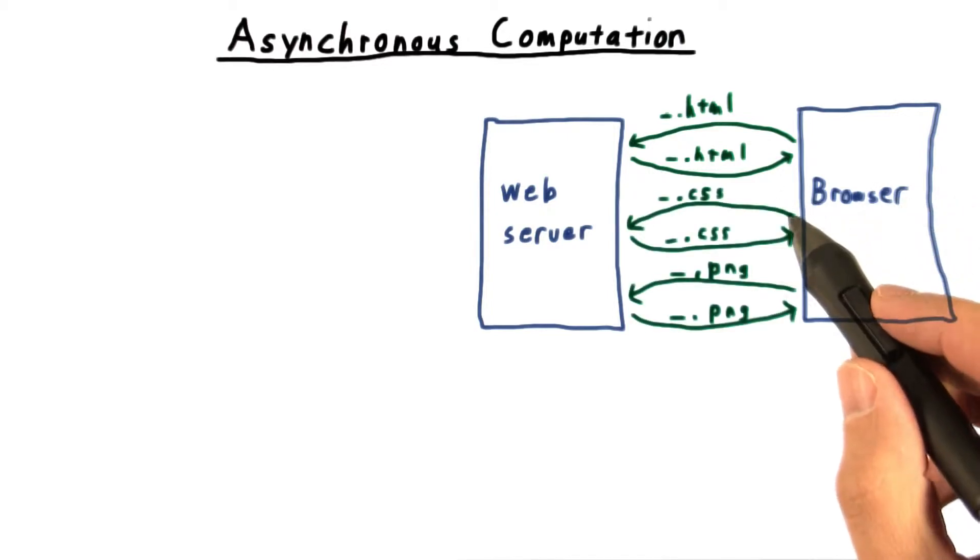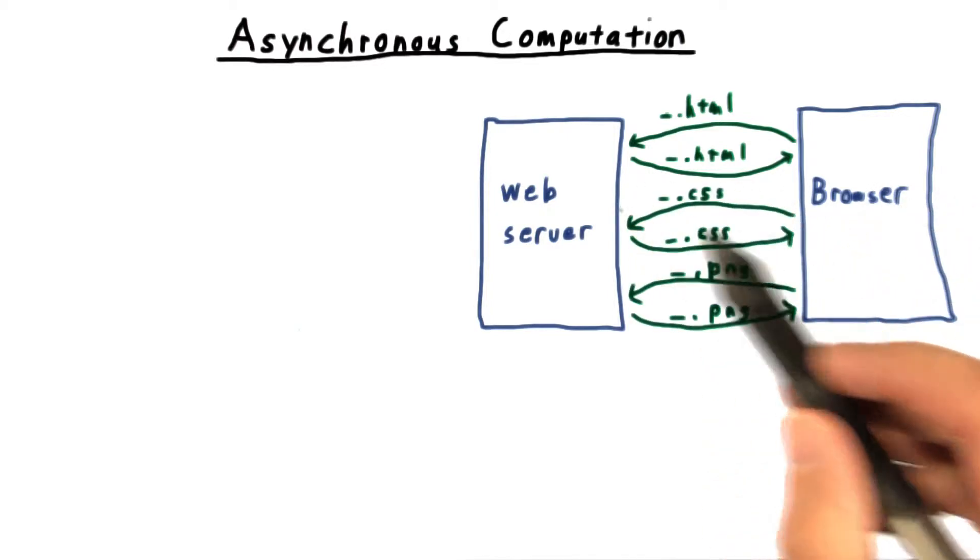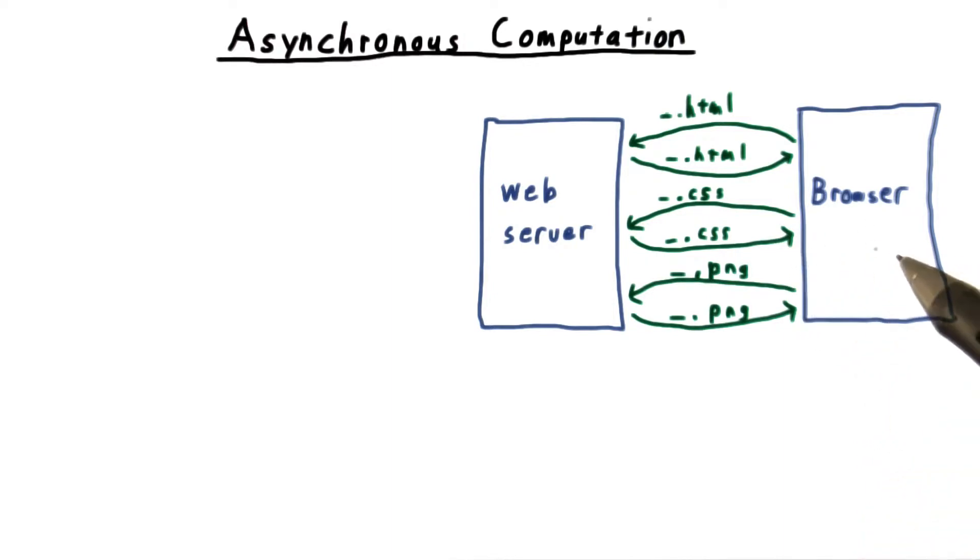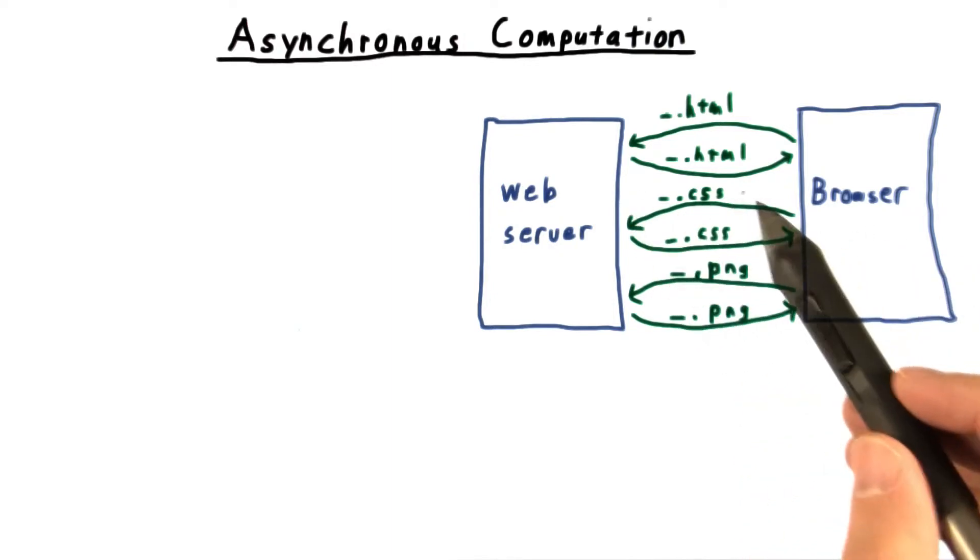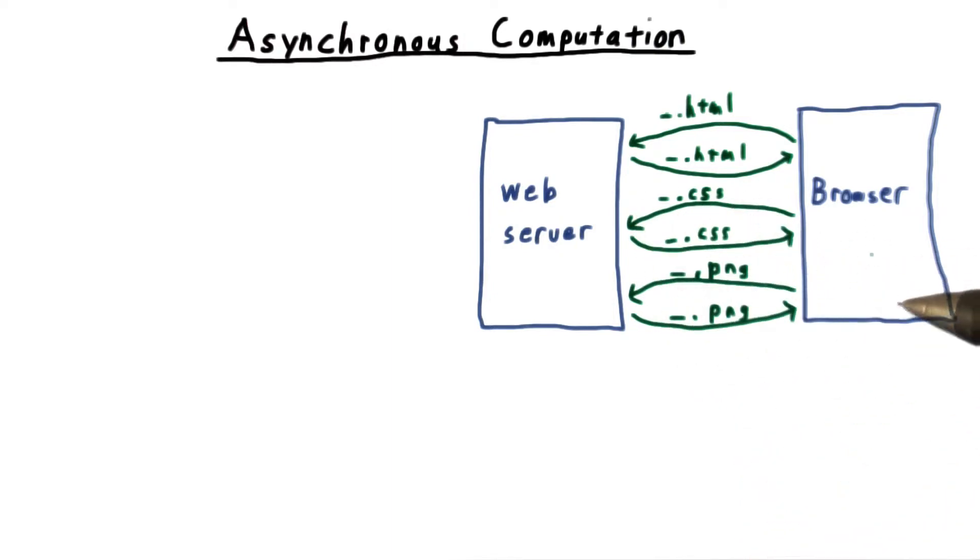To get these details, your browser then sends other HTTP requests back to the server. For example, we might need a style sheet and also an image to help fill out the website.